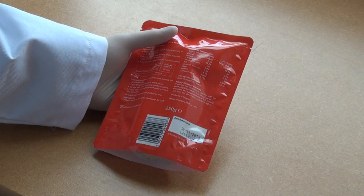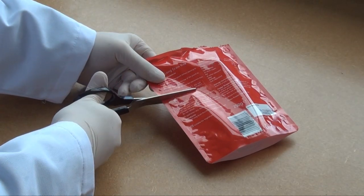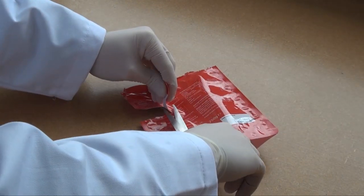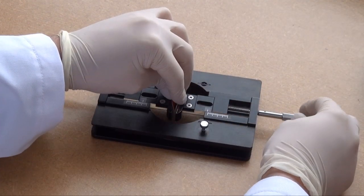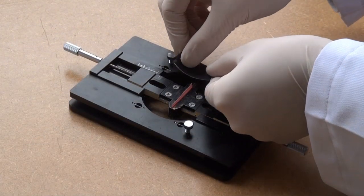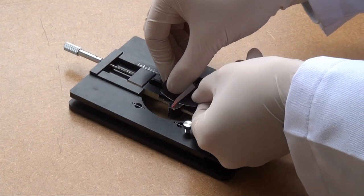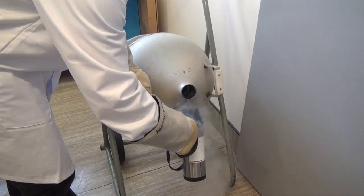When pouches leak or lidding film fails to seal properly to a food tray, it's important to identify which layer of the material has failed. FTIR microscopy can identify each of the plastic layers in order to trace the source of the problem.